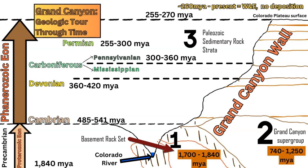All the rocks in the third set, which make up the canyon wall mostly, are part of what's called the Paleozoic era, and these are split into smaller divisions. The first one is the Cambrian period, which spans a short time between 485 to 541 million years ago. These are the oldest rocks in the Paleozoic sedimentary strata — the canyon wall going up to the plateau surface. The Cambrian then turns into the Devonian; there's a little gap there.